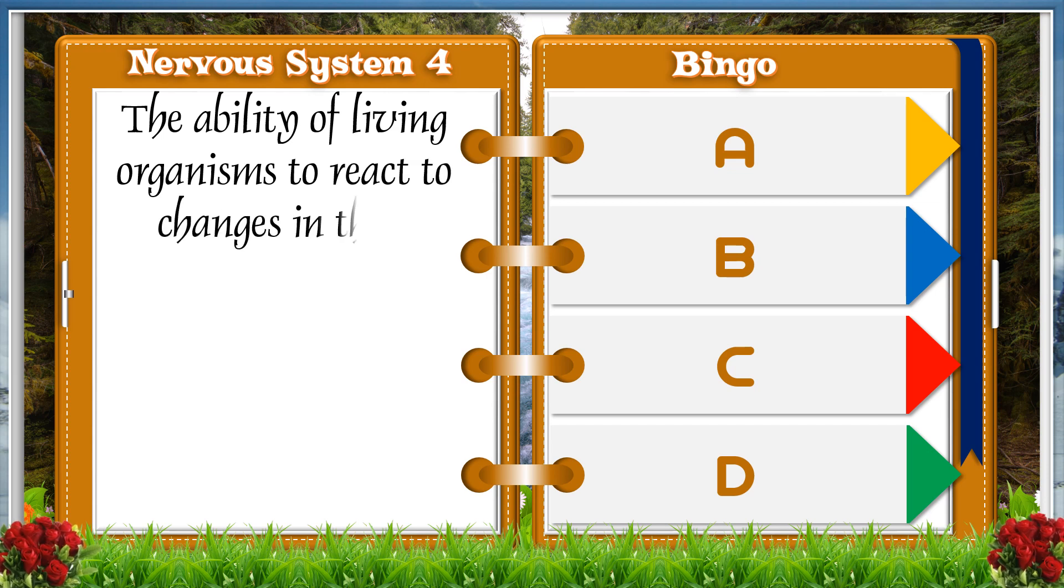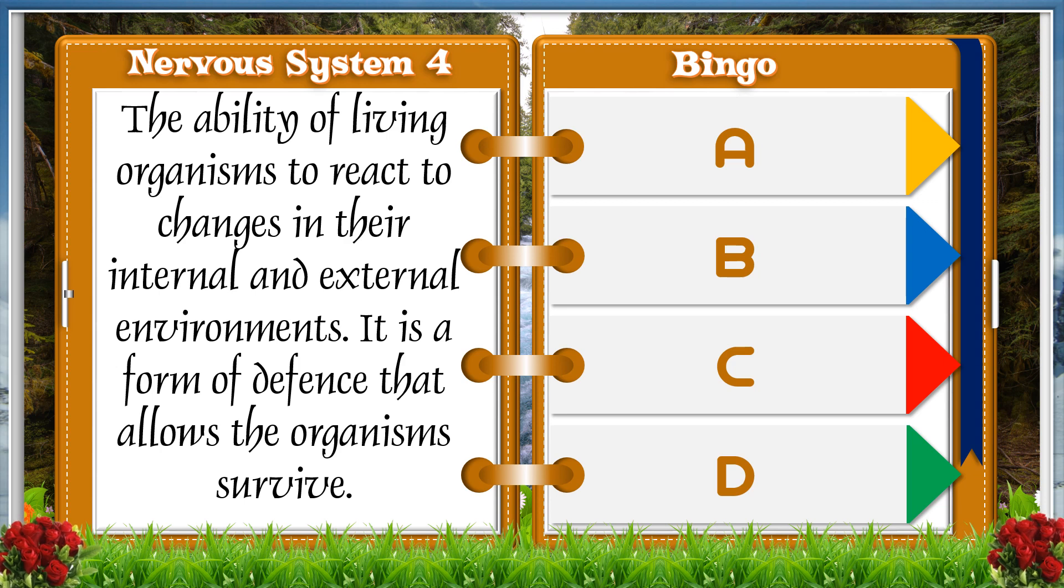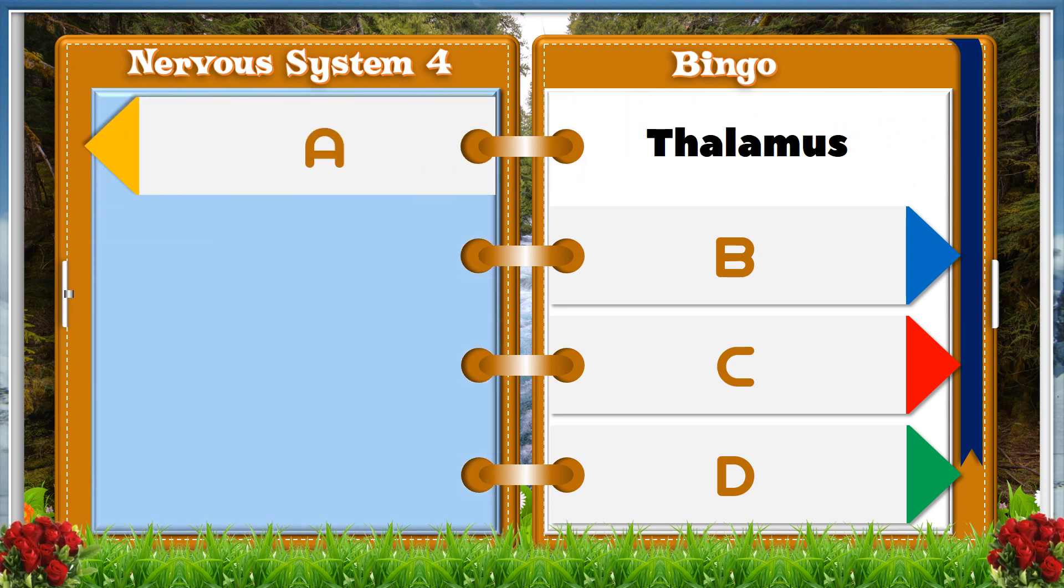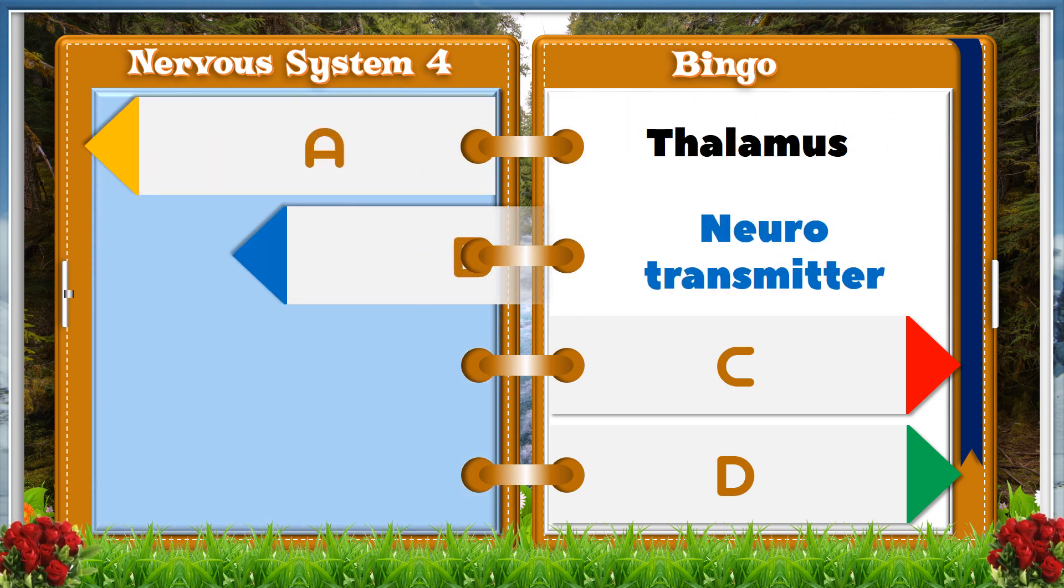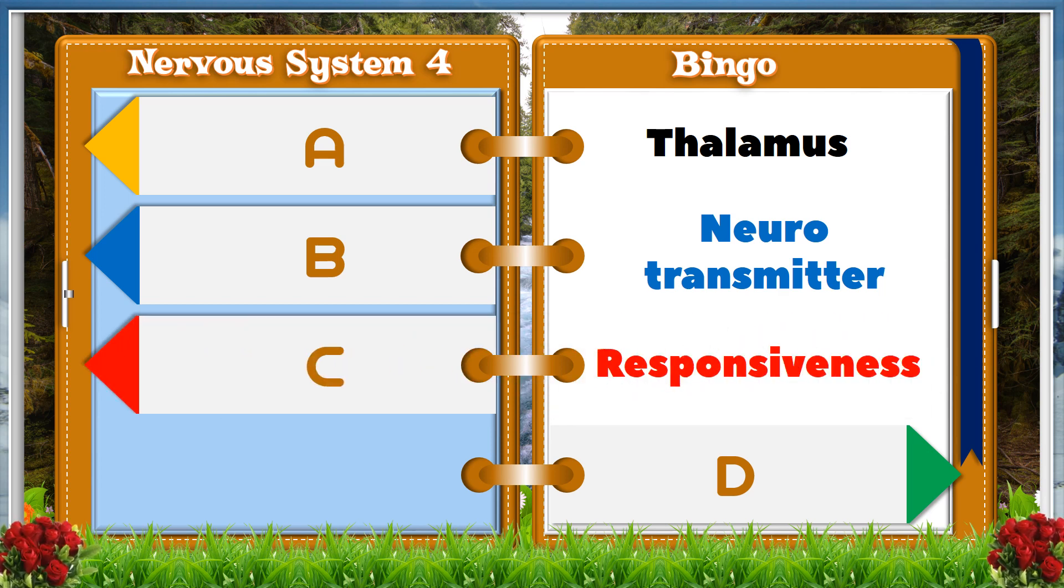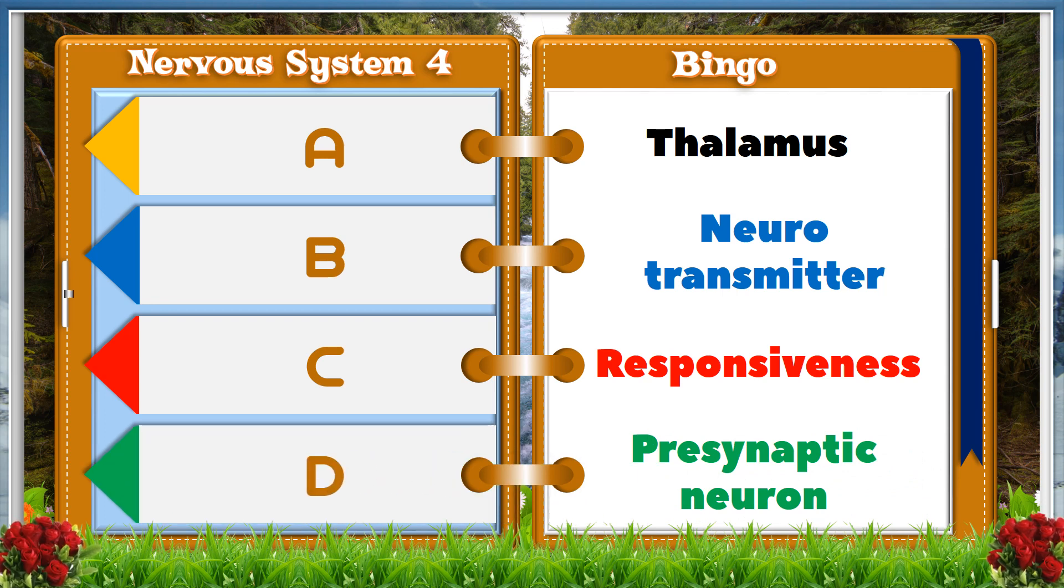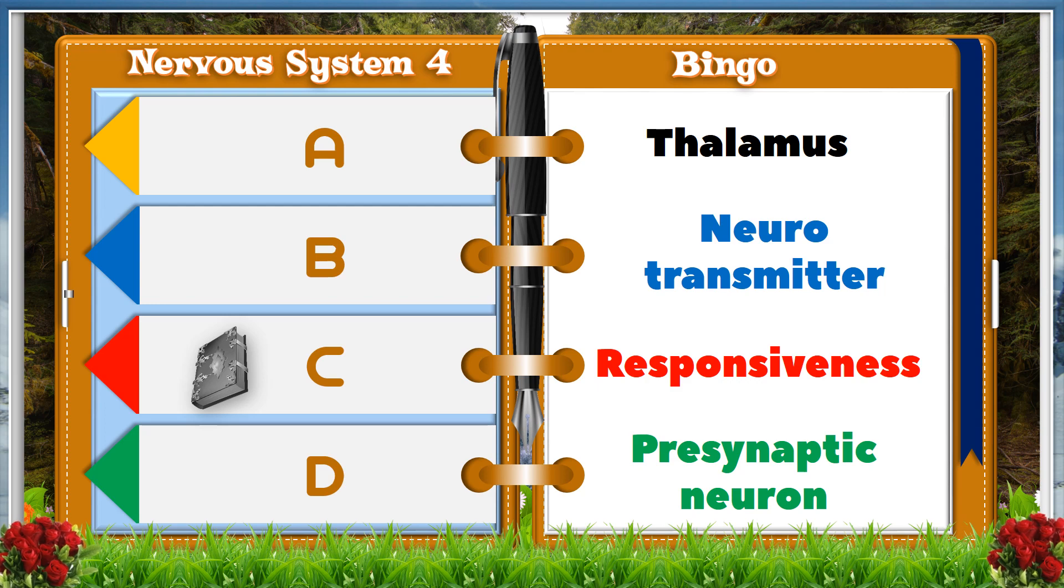The ability of living organisms to react to changes in their internal and external environments. It is a form of defense that allows the organism to survive. A. Thalamus. B. Neurotransmitter. C. Responsiveness. D. Pre-synaptic neuron. And the answer is C. Responsiveness.